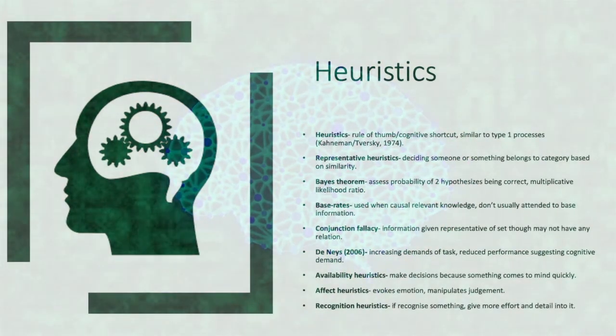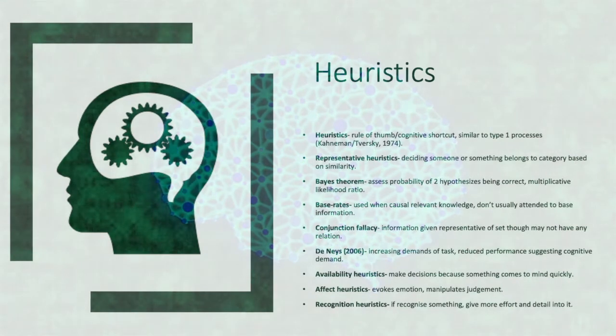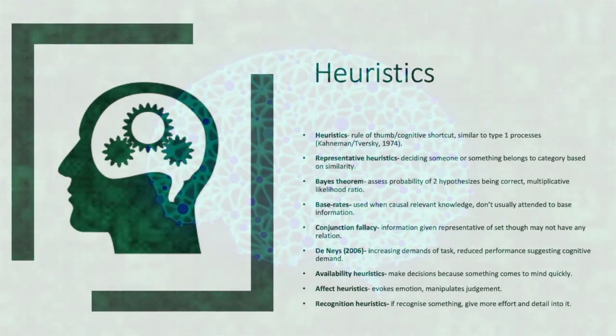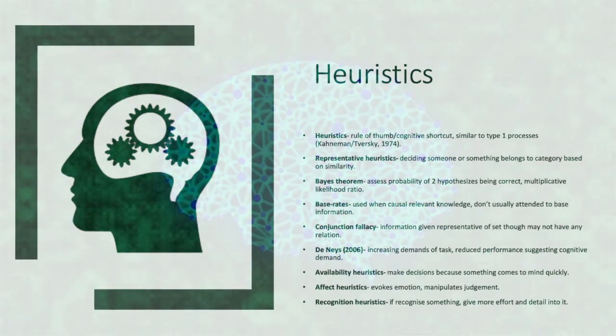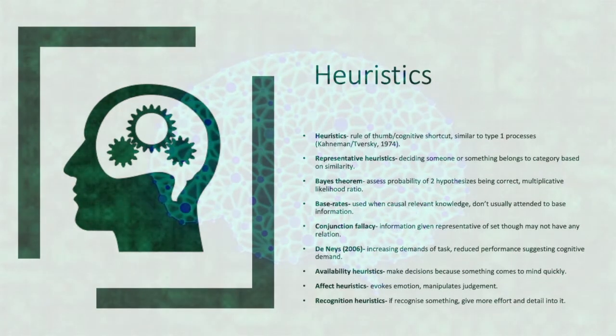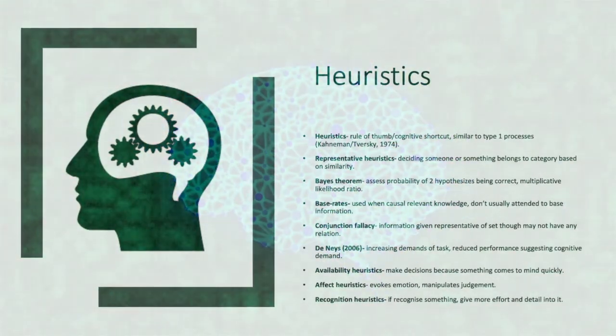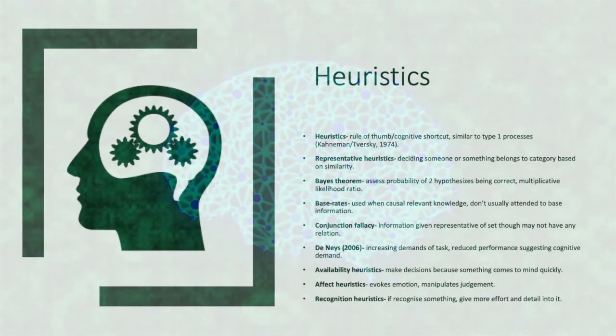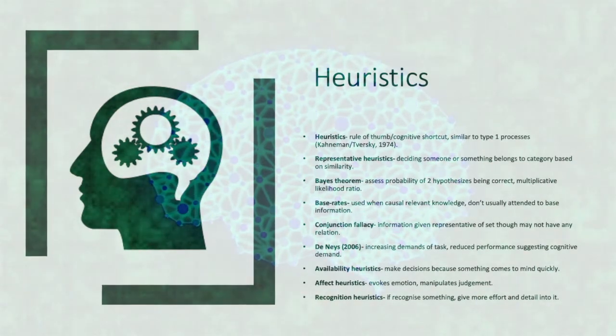Base rates are when individuals take in causal relevant knowledge but tend not to attend to base information. Conjunction fallacy is where the information given is representative of sets though this may not have any relation. Denays 2006 found that increasing demands of tasks reduce task performance, implying the prevalence of increased cognitive demand.